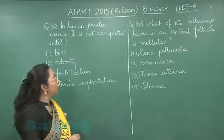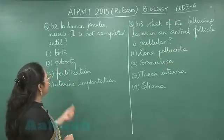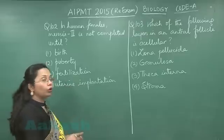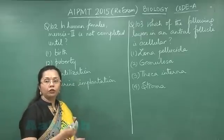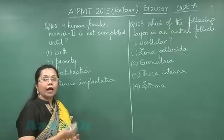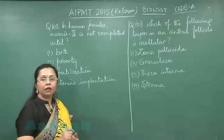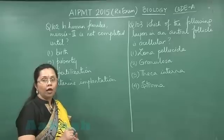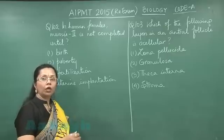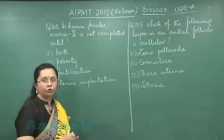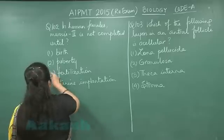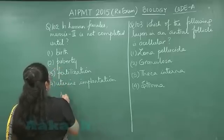In question 102, in human females, meiosis 2 is not completed until — we know that at the time of ovulation, the secondary oocyte is released. That secondary oocyte is suspended at metaphase 2, and the remaining meiosis 2 would be completed only after sperm entry, so that would be at the time of fertilization. Our answer would be 3.